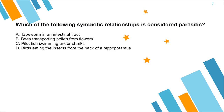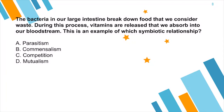Next question: The bacteria in our large intestine break down food that we consider waste. During this process, vitamins are released that we absorb into our bloodstream. This is an example of which symbiotic relationship? A. Parasitism. B. Commensalism. C. Competition. D. Mutualism. The answer is D, mutualism. The reason is because we benefit from the bacteria who are breaking down the waste, and the bacteria benefit because they are receiving nutrition and shelter to live.